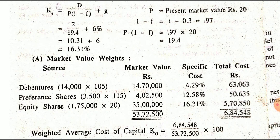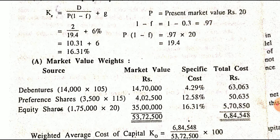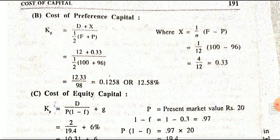For market value weights, we calculate on the basis of both book value and market value. The number of debentures given is 14,000. So 14,000 multiplied by the market price of debenture, which is 105. The specific cost is the same as calculated from the additional information. So 12.58 and 16.31 are the specific costs. Multiply individual security market value by specific cost to get total cost, then WACC equals total cost divided by total capital — giving 12.73.